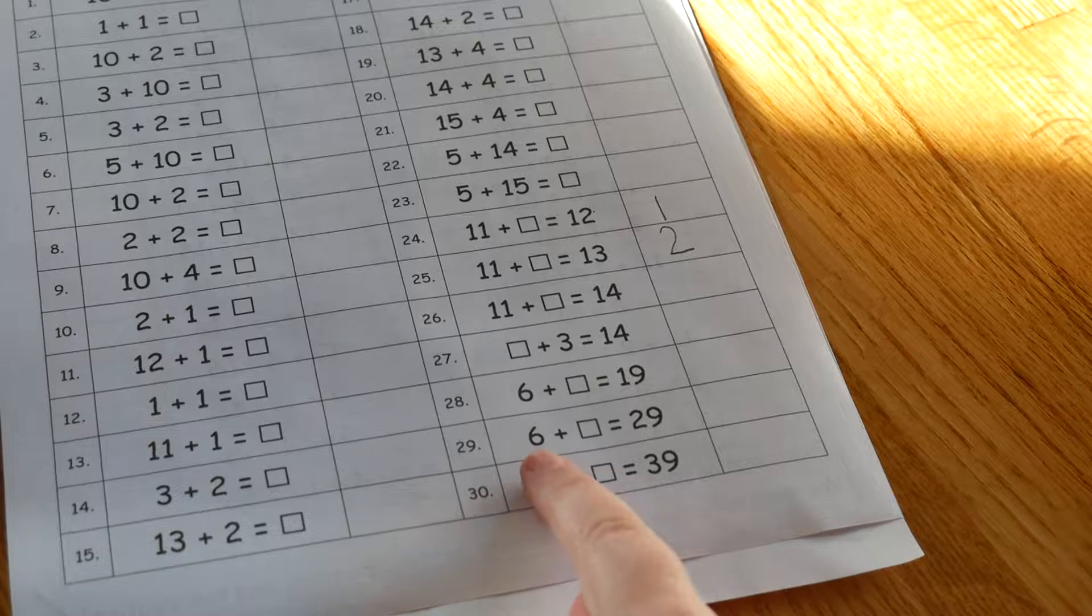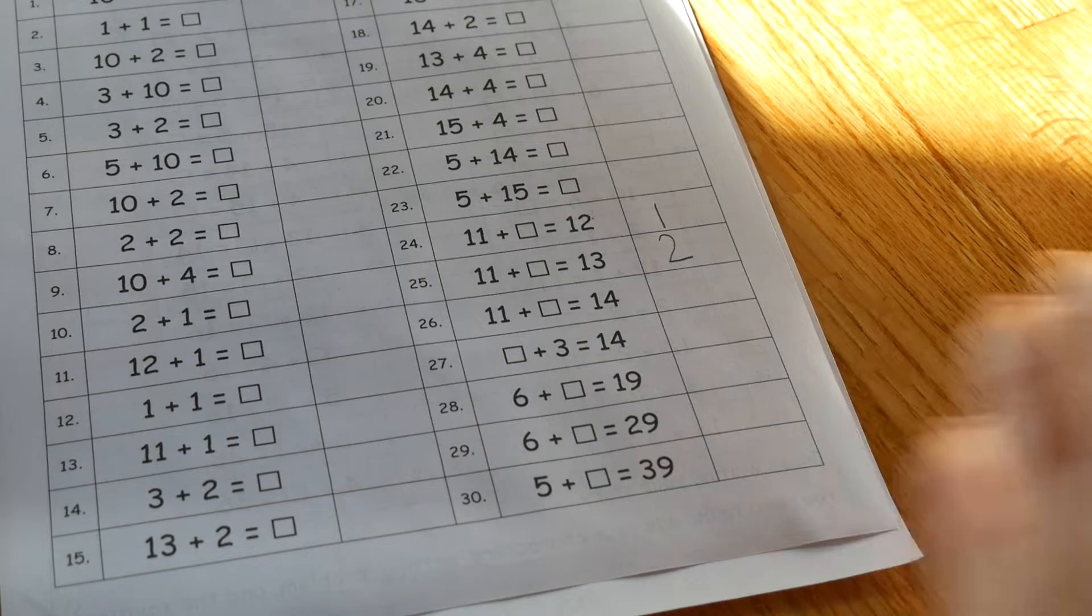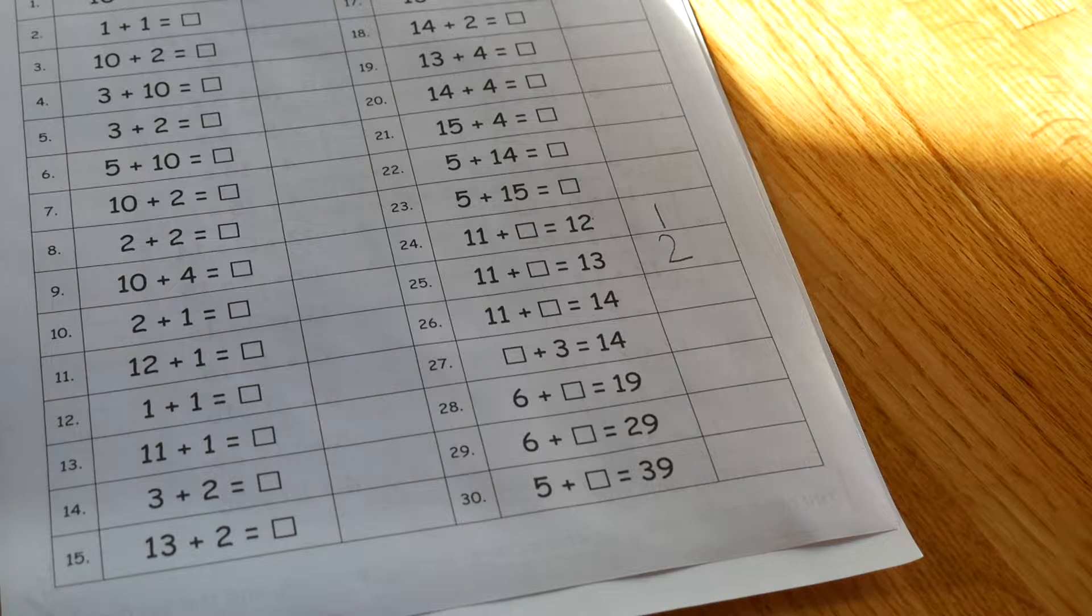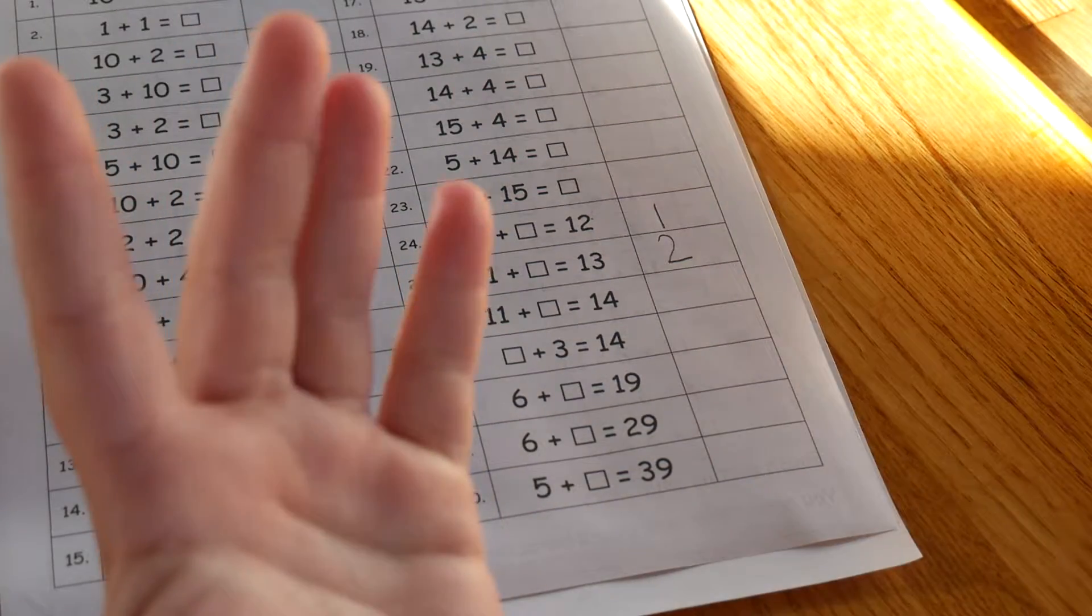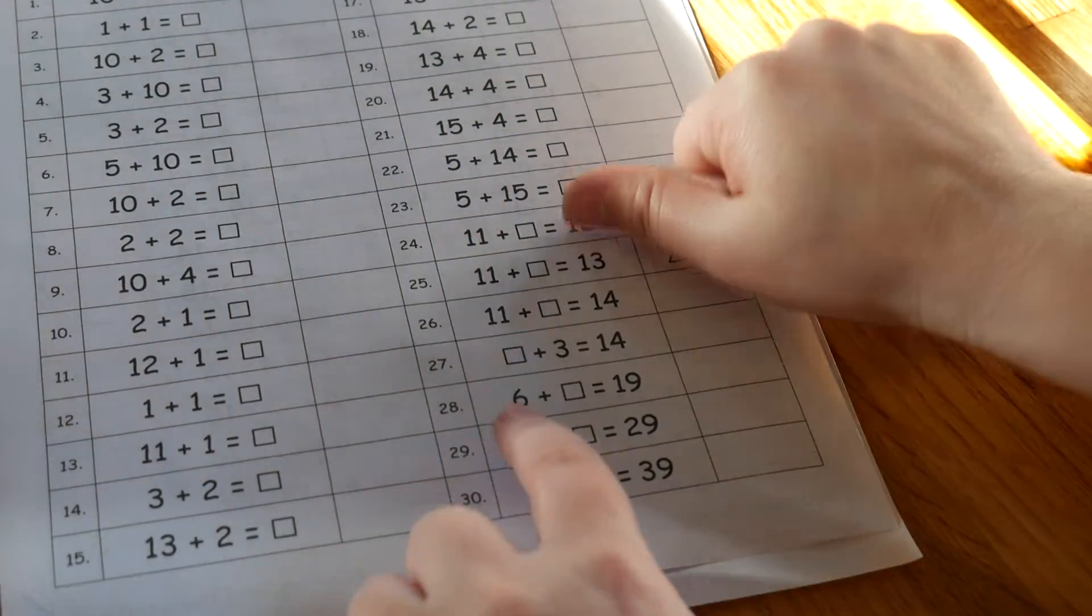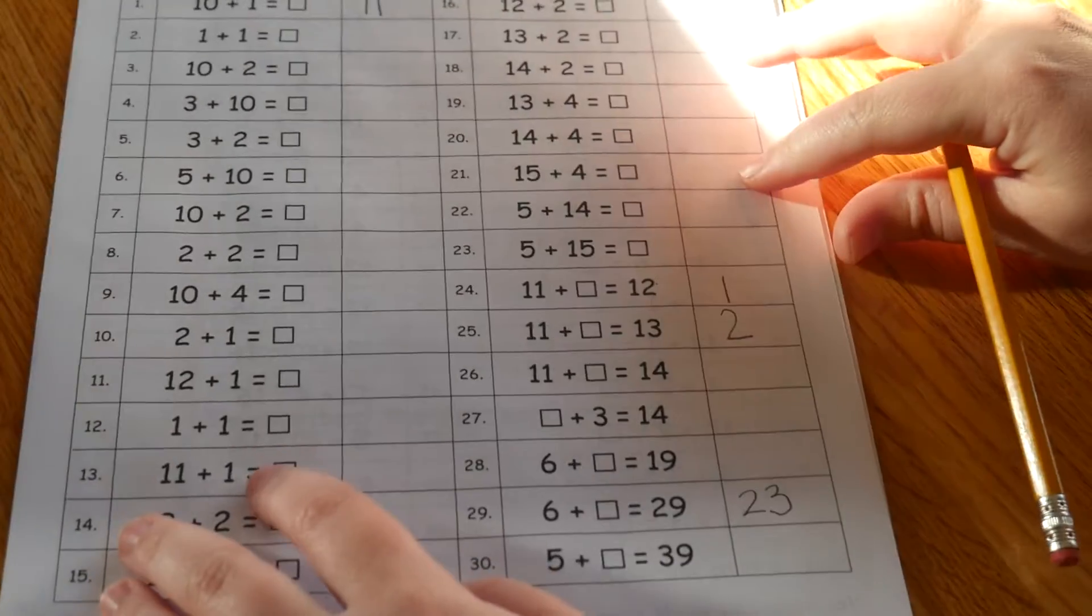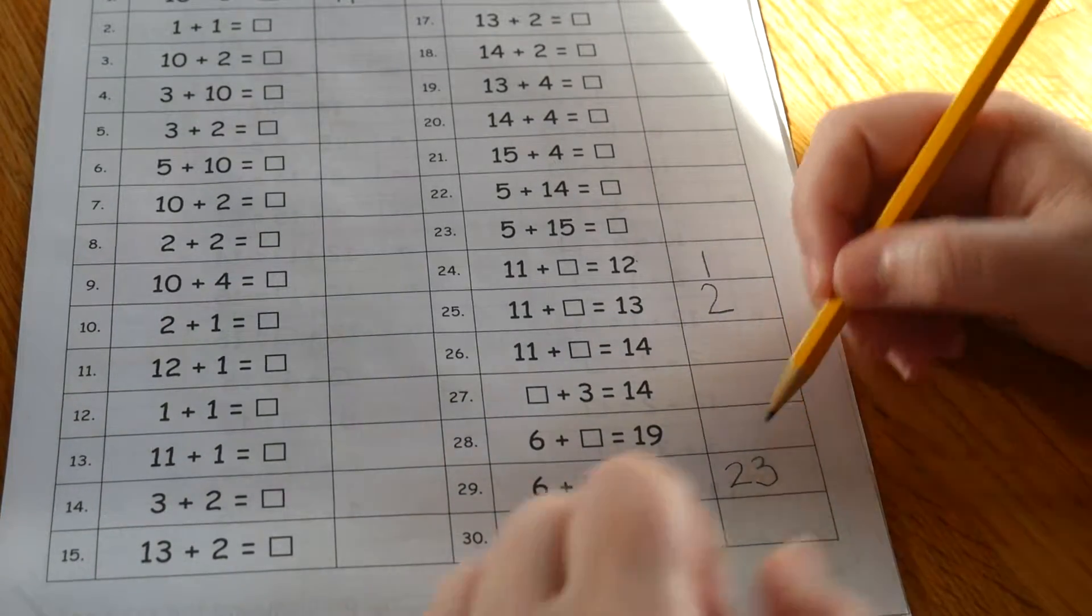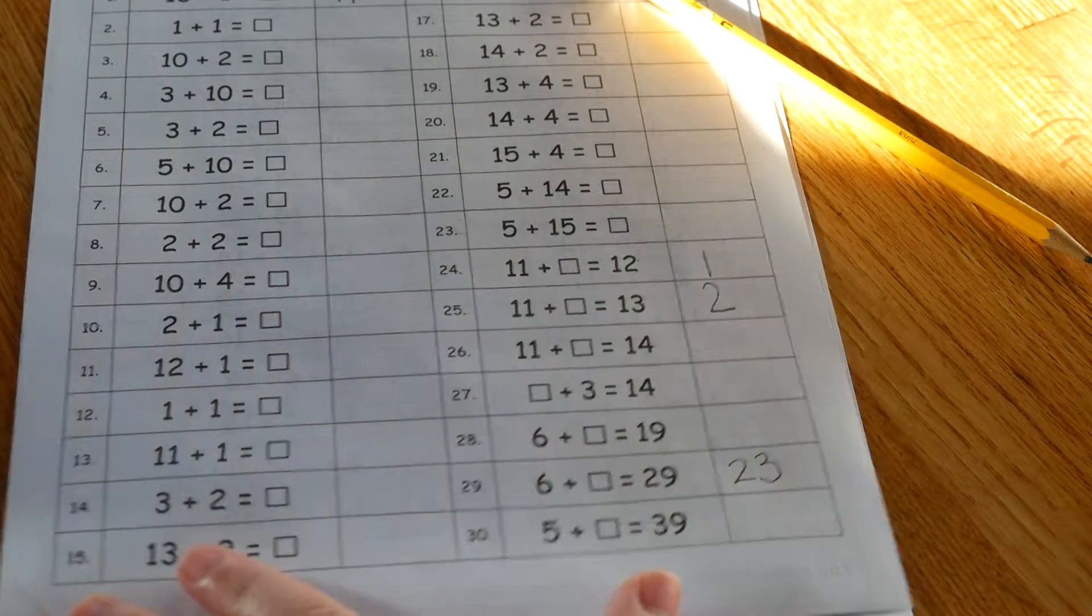I'll do some of these down here with you. For 6 plus blank equals 29, the numbers are kind of far apart to count up, so I'm going to count down. I'll start at 29 and count down: 29, 28, 27, 26, 25, 24, 23. I stop at 23 because that's counting down 6 numbers. Now I'll check my work by counting up 6 from 23 to make sure it equals 29: 23, 24, 25, 26, 27, 28, 29.